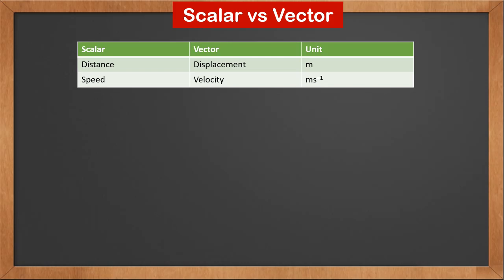There are several scalar and vector quantities that we need to tell apart. A scalar is just a number. A vector doesn't only have a value, but a direction as well. Distance is a scalar and displacement is a vector. The unit for both of them is meter.